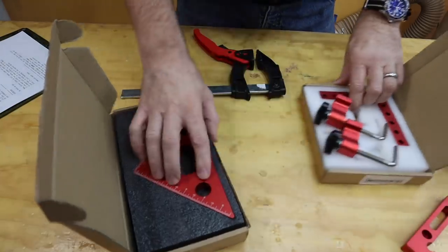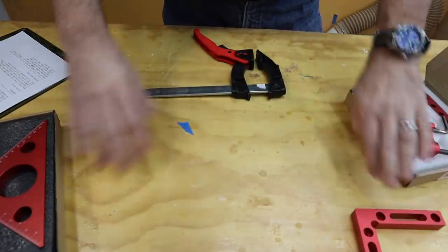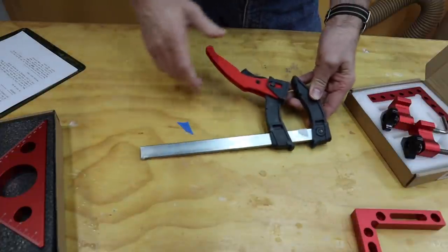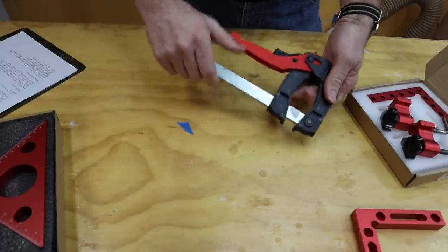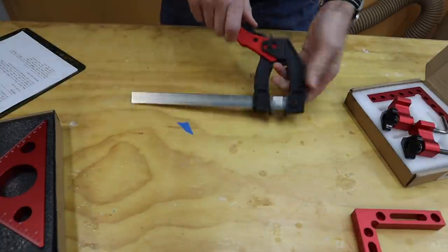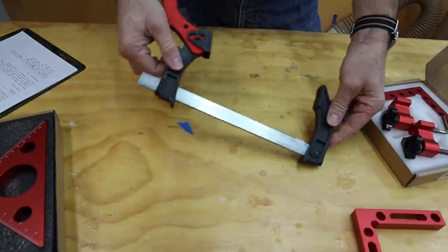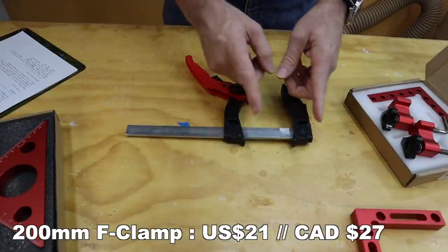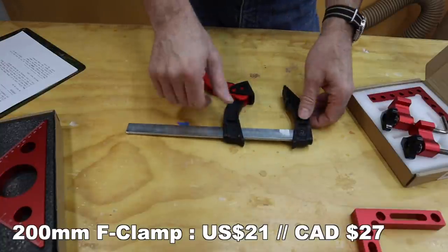Now, mostly what I got are various measuring tools. So let me get this one out of the way first. This is one of those new ratcheting F-style clamps where you just sort of squeeze it in and it's got a little ratchet there. Release the trigger. This is the 200 millimeter size or about eight inches. This is $21 US, $27 Canadian.